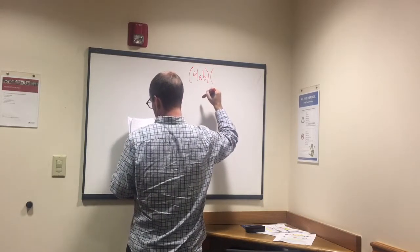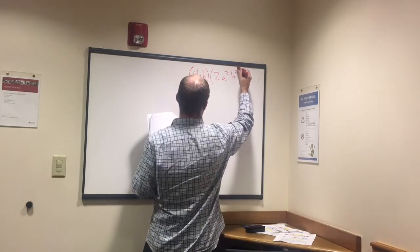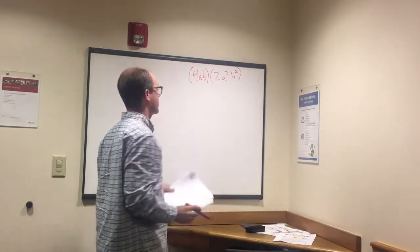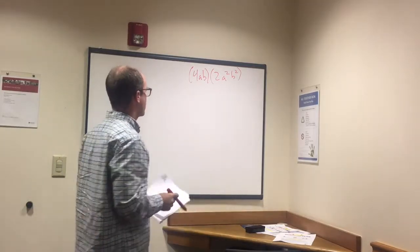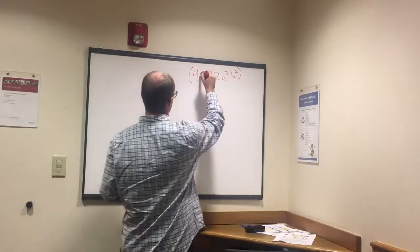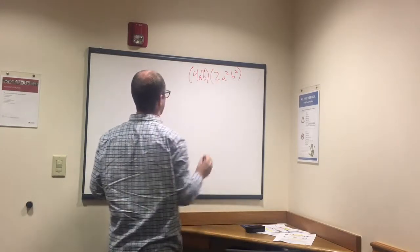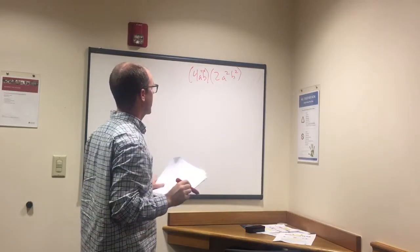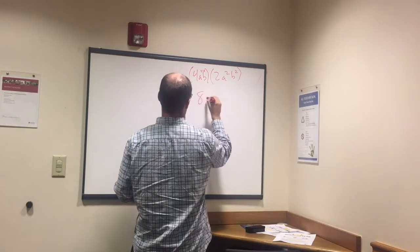4ab times 2a squared b squared, how do we do this? What I meant when I say we add the exponents is remembering that when we see 4ab it essentially means 4a to the first, b to the first. Then we're going to add these together. 4 times 2 is 8, then we have an a.